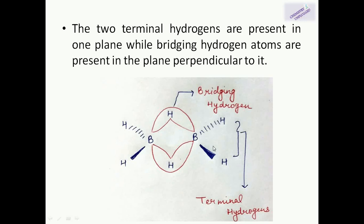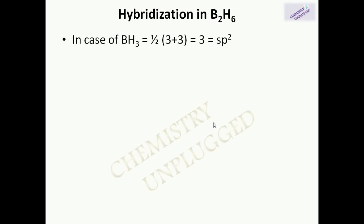Next, we will find the hybridization in B₂H₆. In the case of BH₃, the hybridization is sp2. Using the formula: one-half of (valence electrons in boron + number of monovalent atoms, i.e., hydrogen in BH₃), the sum is three, and three corresponds to sp2 hybridization.